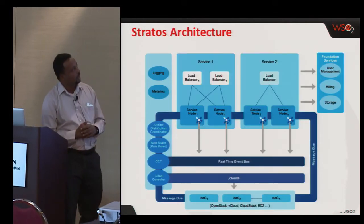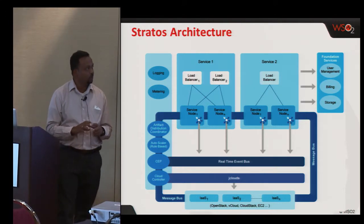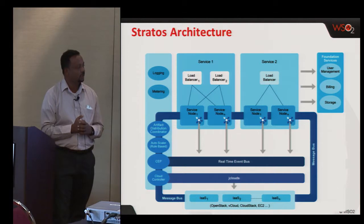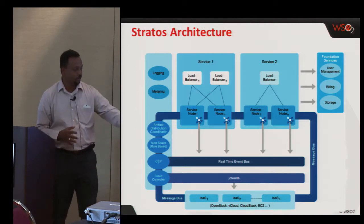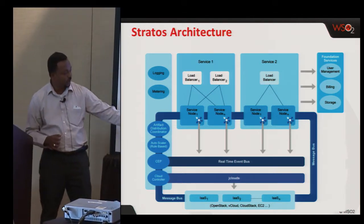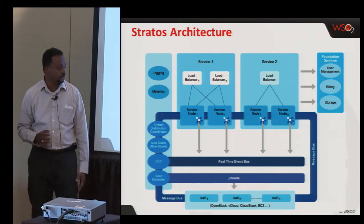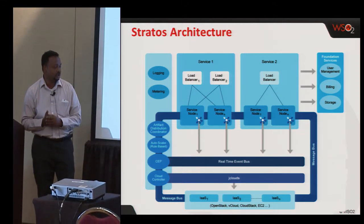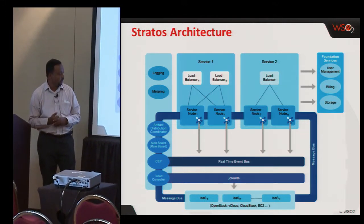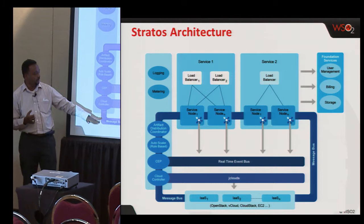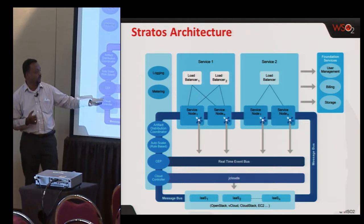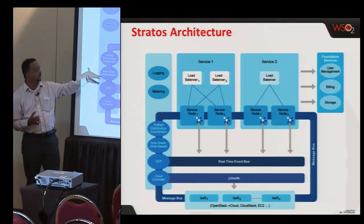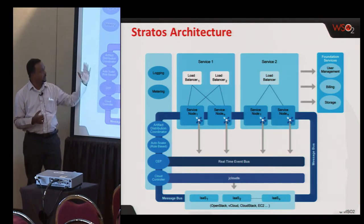This is the overall architecture of Apache Stratos. I will go into the more important sections and explain how it works. At the bottommost, you have the infrastructure as a service. You can have any IaaS cloud — for example, OpenStack, vCloud, CloudStack, EC2, et cetera. We integrate the infrastructure as a service using the jClouds API into the platform as a service.